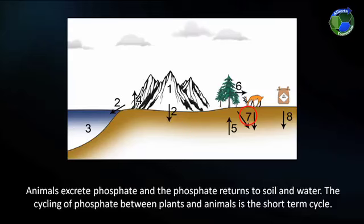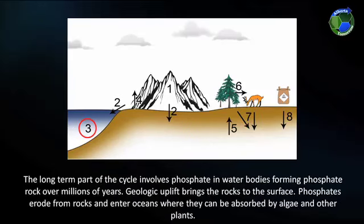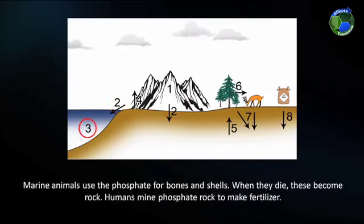Animals excrete phosphate and the phosphate returns to soil and water. The cycling of phosphate between plants and animals is the short-term cycle. The long-term part of the cycle involves phosphate in water bodies forming phosphate rock over millions of years. Geologic uplift brings the rocks to the surface. Phosphates erode from the rocks and enter oceans where they can be absorbed by algae and other plants. Marine animals use the phosphate for bones and shells. When they die, these become rock.